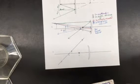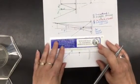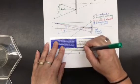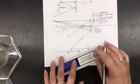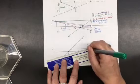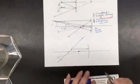And then we're going to go in parallel and out through the focal point. So we pretty much know our image is going to be right here.